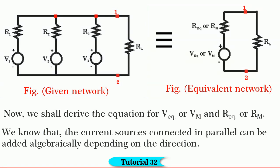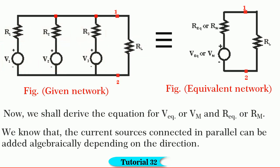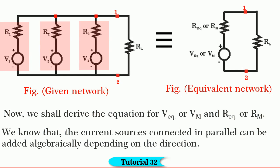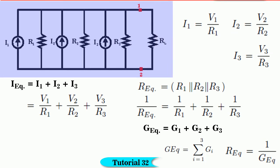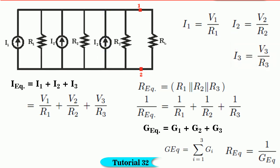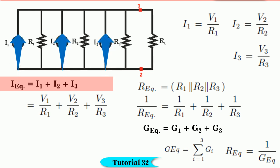You find that three voltage sources V1, V2, V3 in series with their respective resistances R1, R2, and R3 are connected across a load branch RL. We know that current sources connected in parallel can be added algebraically depending on their direction. So, converting each voltage source into a current source, we get the circuit shown in figure. We know I1 = V1/R1, I2 = V2/R2, and I3 = V3/R3. I equivalent in this circuit is I1 plus I2 plus I3, as the current source direction is the same in all sources.